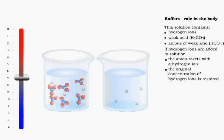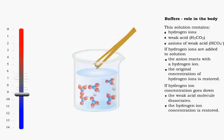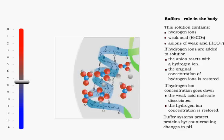Likewise, if hydrogen ions are lost from the solution, the carbonic acid dissociates, releasing a hydrogen ion and restoring the hydrogen ion concentration. Buffer systems protect proteins by counteracting changes in pH.